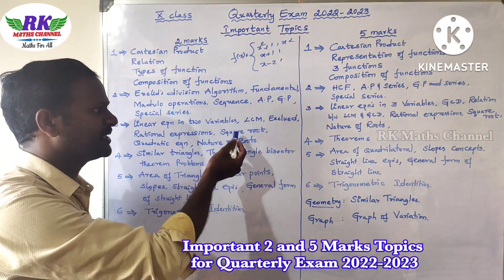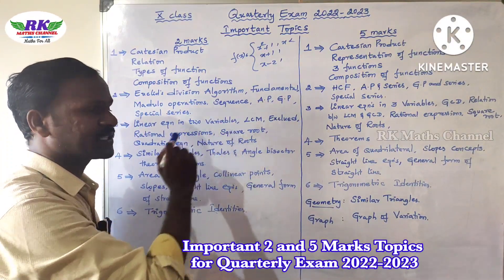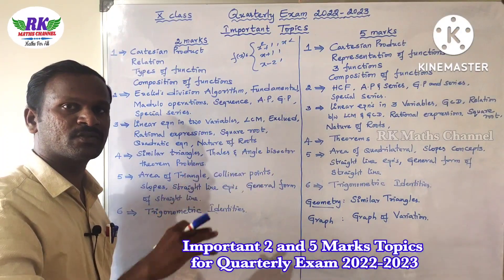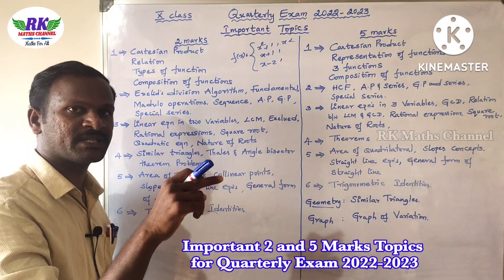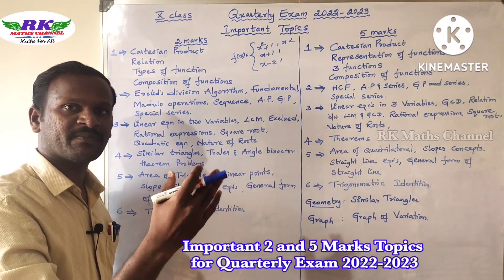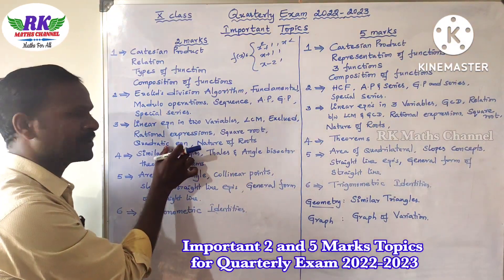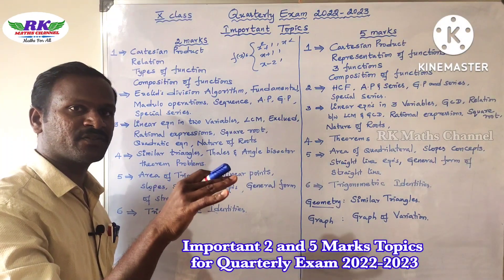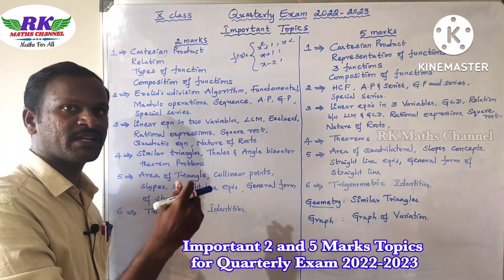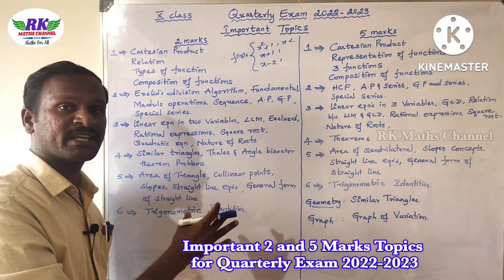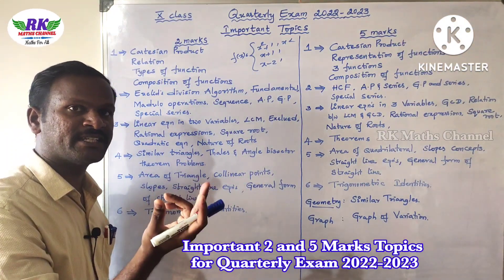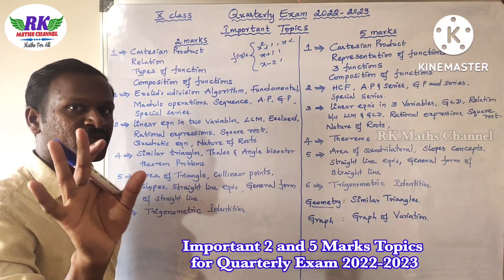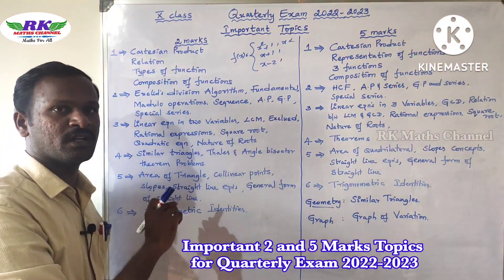Next is square root — exercise 3.7 and example 3.19. Square root will be 2 marks. Next: quadratic equation. If you look at sum of roots and product of roots, we will know the equation. Sum of roots is α+β, product is α×β. Equation is x² − (α+β)x + αβ — that will be 2 marks. For nature of roots: discriminant δ = b²−4ac. Delta value determines if roots are real and equal, real and unequal. The formula is x = (−b ± √(b²−4ac))/2a. This is 2 marks.